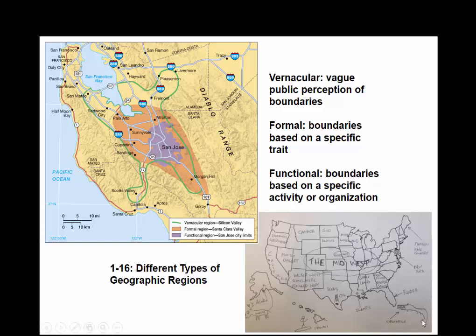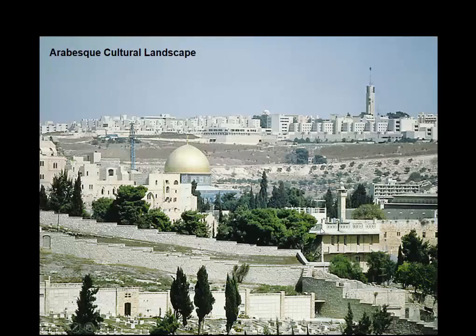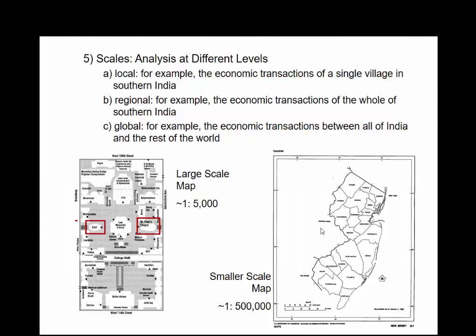This is kind of neat — someone interviewed people about what they think of the United States, so you can see Walter White lives down here somewhere, Stephen King country, the Midwest. You can see how people interpret the United States — correctly or incorrectly. We also have the idea of scale: large-scale maps versus small-scale maps. Large-scale basically means the fraction 1 over 5,000, which is a larger number than 1 over 500,000.